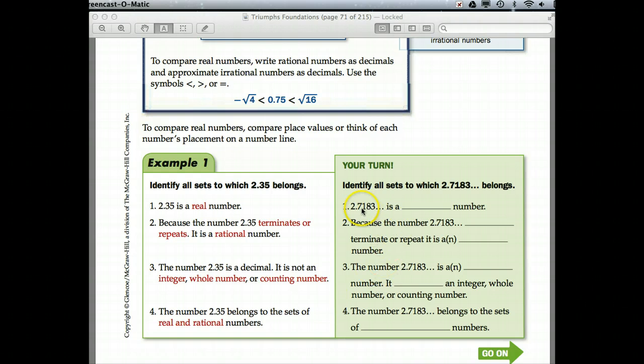Okay, 2.7183, what kind of number is that? You say real? Good job. Because it does not terminate or repeat, it is not, let's see, or repeat, it is an irrational number. It is irrational. It is not an integer, and it belongs, so it belongs to the set of real and irrational.